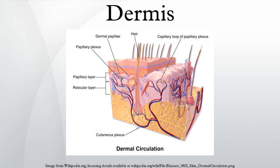The dermis is composed of three major types of cells: fibroblasts, macrophages, and adipocytes. Apart from these cells, the dermis is also composed of matrix components such as collagen, elastin, and extrafibrillar matrix — an extracellular gel-like substance primarily composed of glycosaminoglycans, proteoglycans, and glycoproteins.